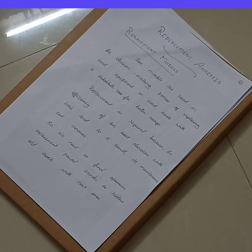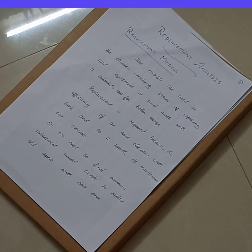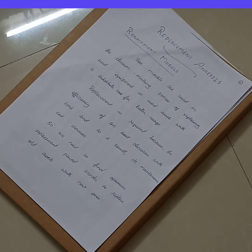Why do we replace an item or a machine? Any machine or item, with the passage of time there will be deterioration involved. The efficiency of the machine or item will decrease with time. As the efficiency decreases, the maintenance cost of that particular item will increase. It will reach a point where the maintenance cost is much higher than buying another item, so we will have to replace the machinery.